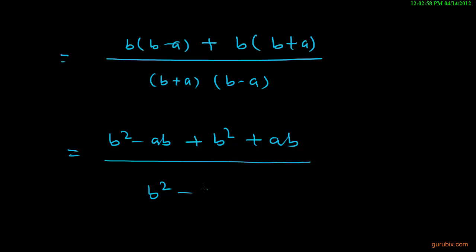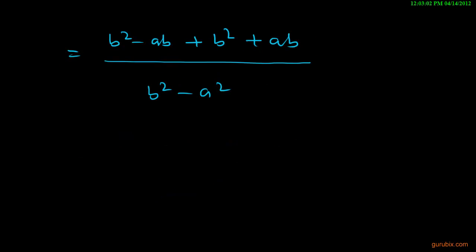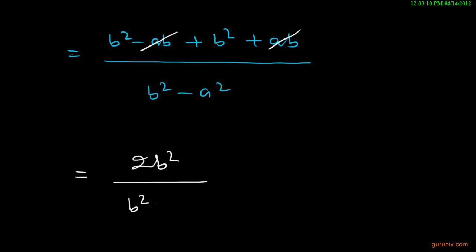In the denominator it will be b square minus a square. Now we can cancel out minus ab with positive ab, then it will be 2b square over b square minus a square, which is equals to the right hand side. Hence proved. Thank you.